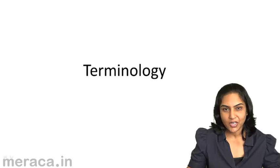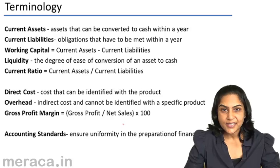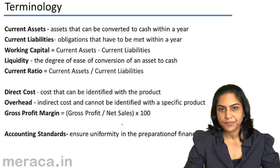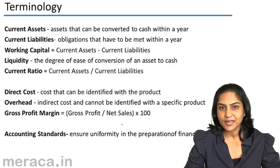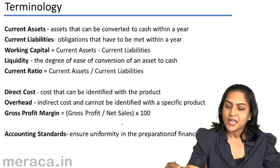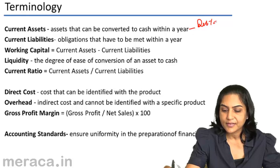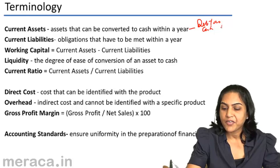We begin with terminology. Current assets are assets that are expected to be converted to cash within a year or within an operating cycle, whichever is longer. Current assets normally include debtors, cash, inventories, etc.